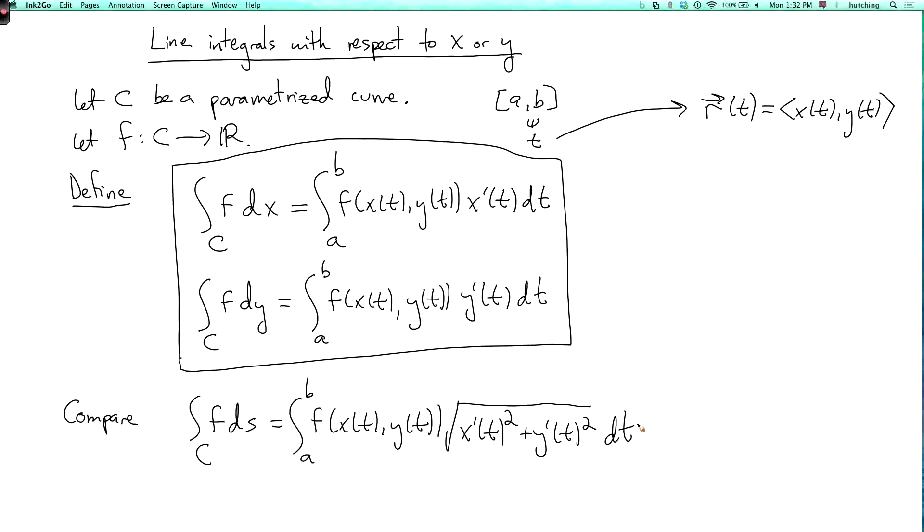Okay, so these are all kind of similar. You're integrating from a to b of f(x(t), y(t)) times something. And what's the something? Well, for arc length, this is the length of the velocity vector.